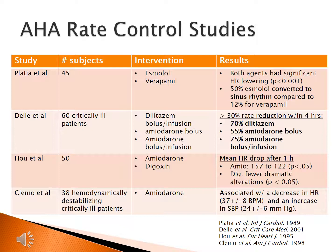The last study reviewed was by Clemmel's group in 38 hemodynamically destabilized critically ill patients who had already received conventional therapy — including diltiazem, metoprolol, and attempted cardioversions. These patients then received amiodarone, which was associated with a decrease in heart rate of 37 beats per minute and an increase in systolic blood pressure. This is significant for critical care patients with blood pressures dropping below 100, and concludes that amiodarone is appropriate to consider for decreasing heart rate while maintaining systolic blood pressure.